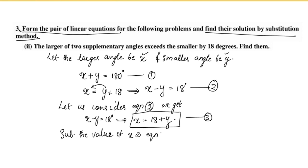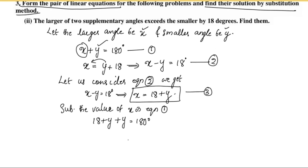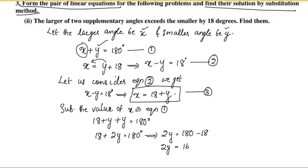Equation 1: substitute into equation 1, which equals 180 degrees. So 18 plus 2y is equal to 180 degrees.